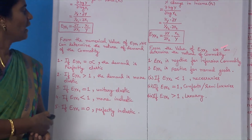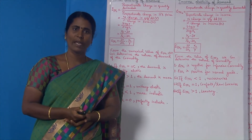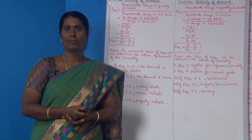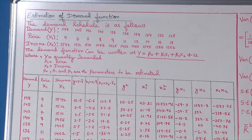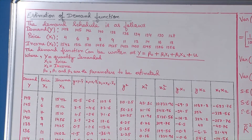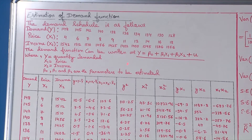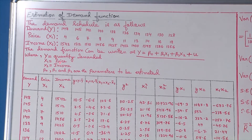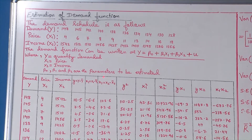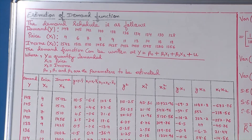With this information, we shall derive and estimate the demand function by using MLRM. We shall estimate the demand function using multiple linear regression model for a given demand schedule. The demand schedule is given for demand, price, and income. The demand function can be written as y = β₀ + β₁x₁ + β₂x₂ + u, where y represents quantity demanded, x₁ represents price of a commodity, and x₂ represents income of a consumer. β₀, β₁, and β₂ are the parameters to be estimated, and the given values are presented in the table.